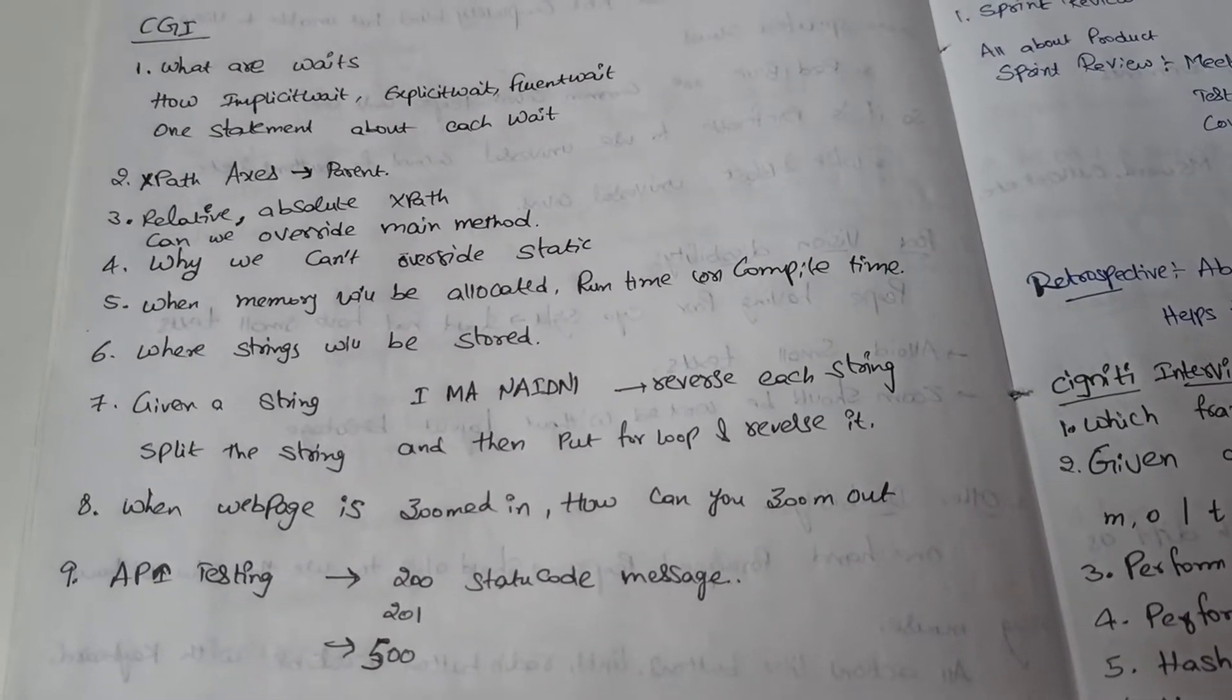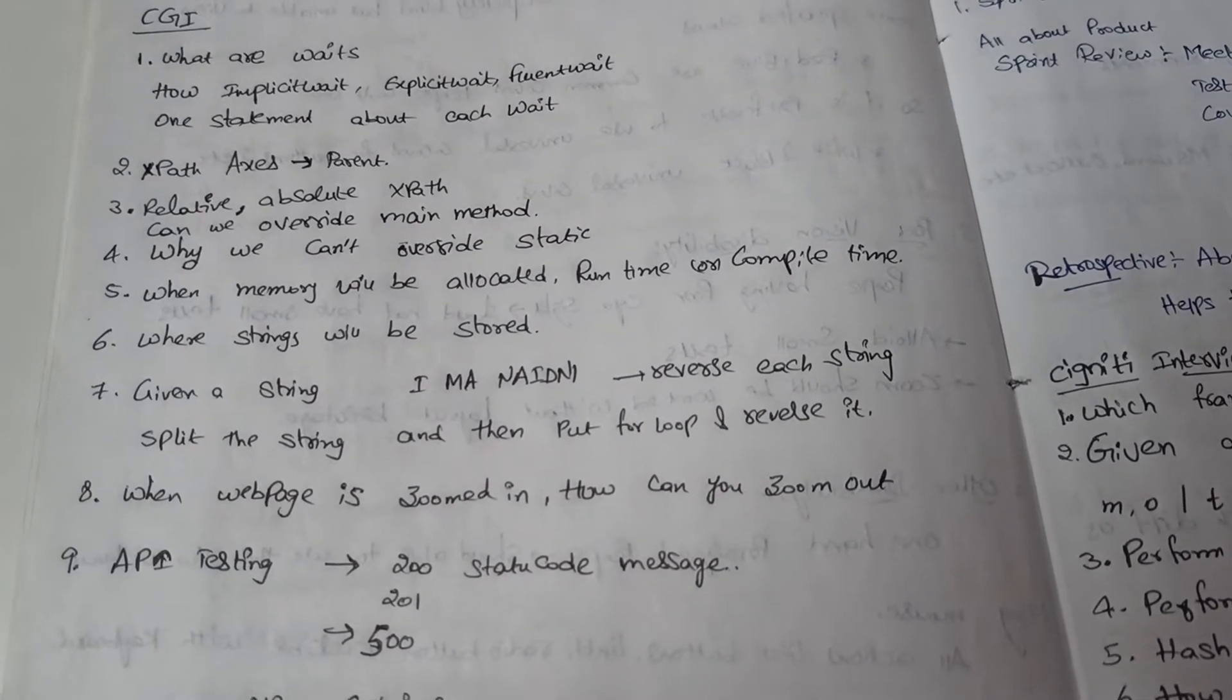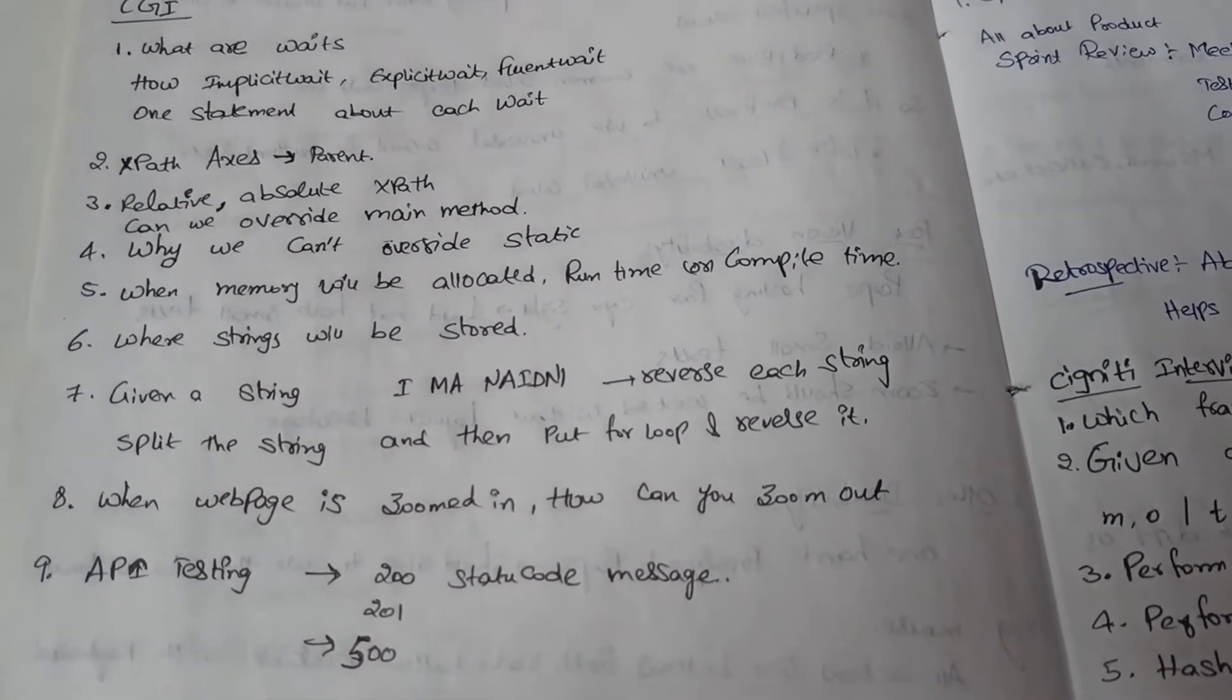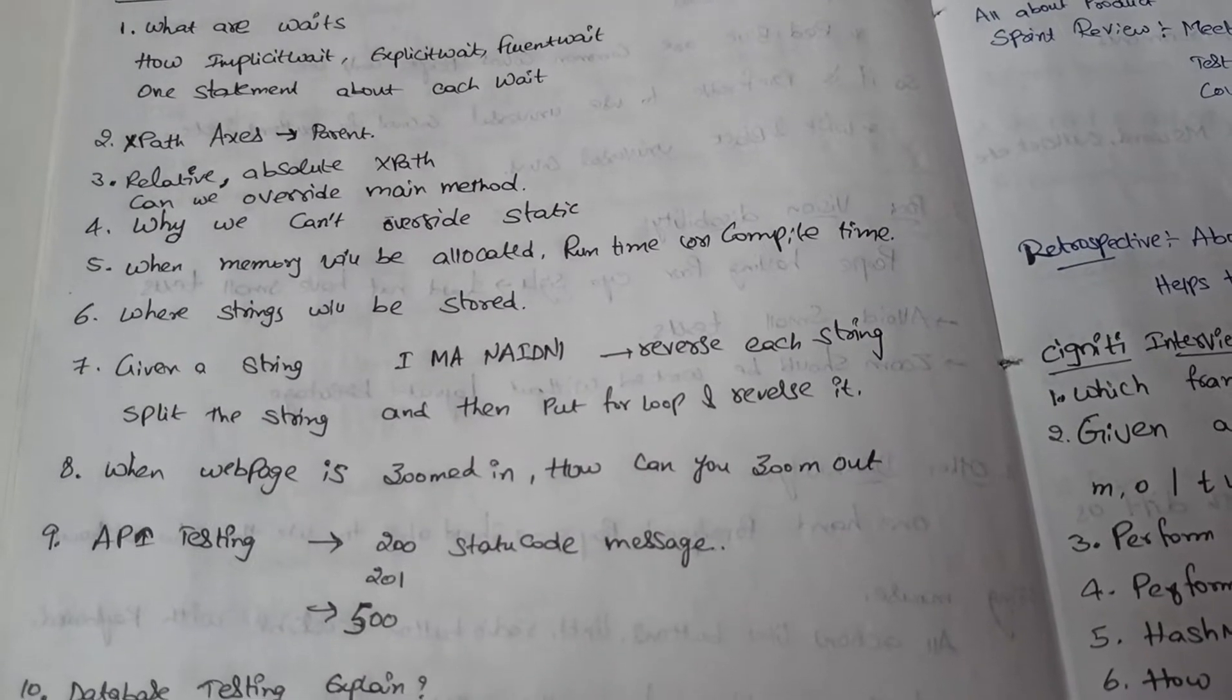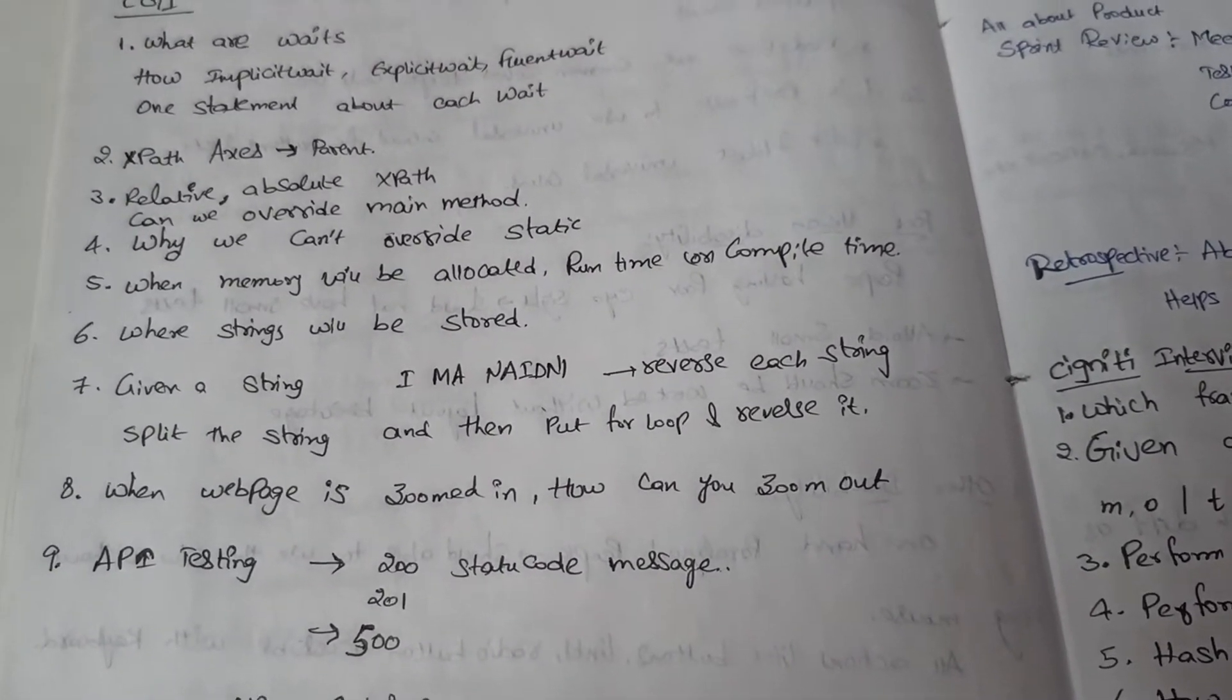We have to mention one statement about each wait. The second question is XPath axes - following, preceding, everything. We have to explain about those. Third question is the difference between relative XPath and absolute XPath.